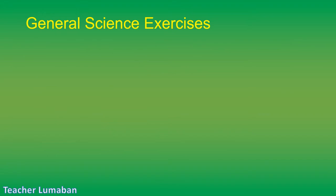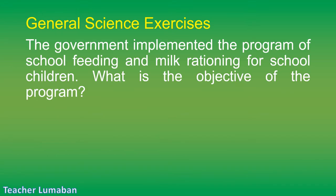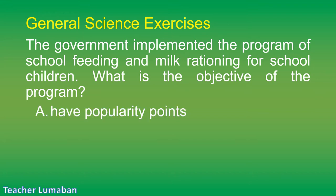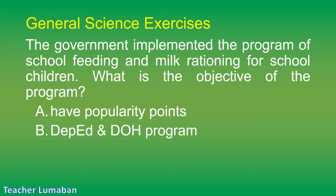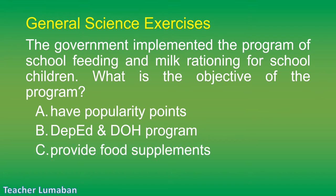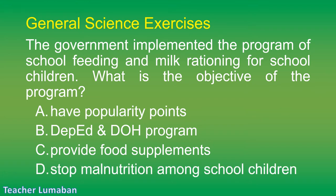The government implemented the program of school feeding and milk rationing for school children. What is the objective of the program? Letter A: have popularity points. Letter B: Department of Education and Department of Health program. Letter C: provide food supplements. Letter D: stop malnutrition among school children.